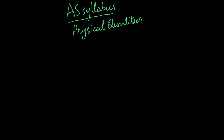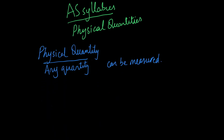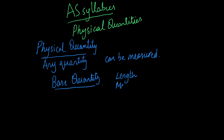Let's kick off. First of all, what is a physical quantity? It's any quantity that can be measured. A type of physical quantity is a base quantity. A base quantity is a quantity that cannot be split further into simpler quantities. Examples include length, mass, time, temperature, and amount of substance.